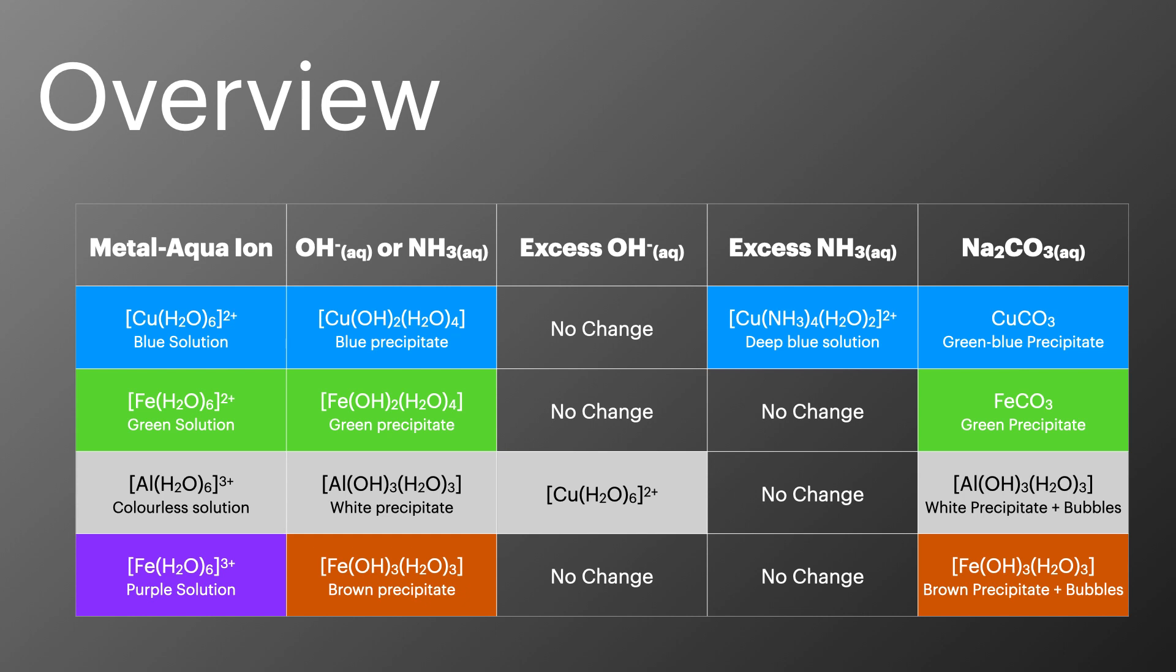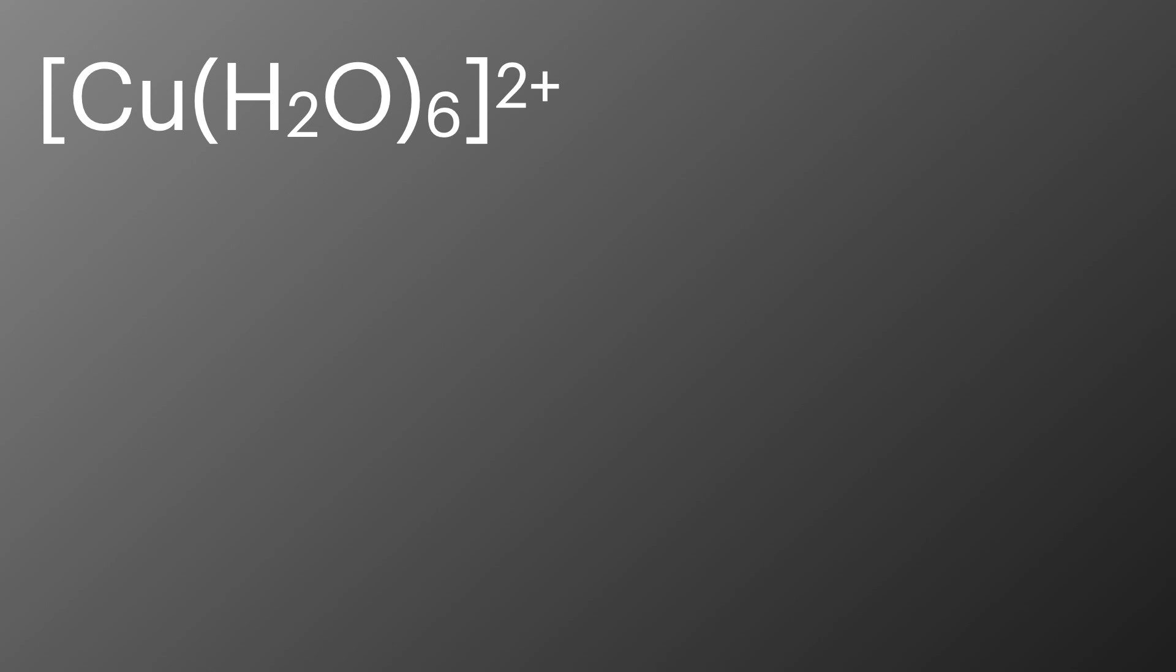So with those four metal aqua ions in mind, the reactions and colour changes can be summarised in this table. It's a handy revision tool, however I think it really helps to understand the chemistry behind the observations so you can really get a grasp of it rather than just relying on remembering it in your exam. We'll now look at each of these four metal aqua complexes in turn starting with the copper aqua complex.